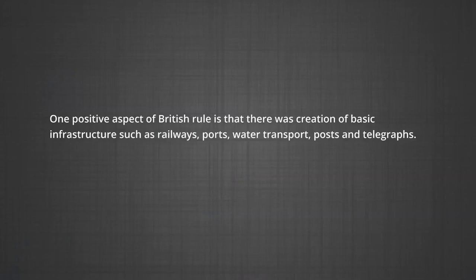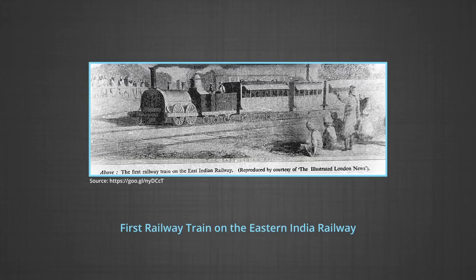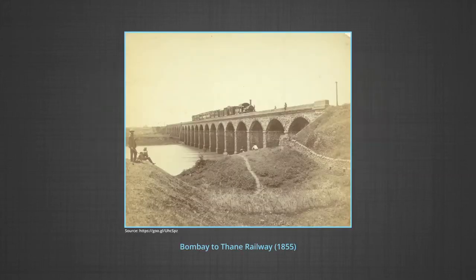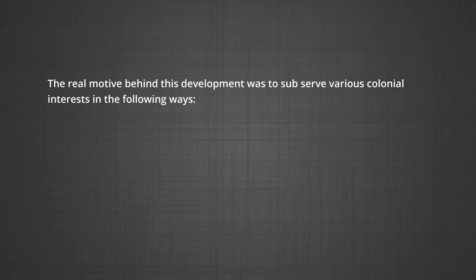One positive aspect of British rule is that there was creation of basic infrastructure such as railways, ports, water transport, post and telegraph. The introduction of railways in India in 1853 is considered one of their most important contributions. The railways played a major role in national integration as it enabled people of India to undertake long distance travel and thereby break geographical and cultural barriers. However, the real motive behind this development was to subserve various colonial interests.